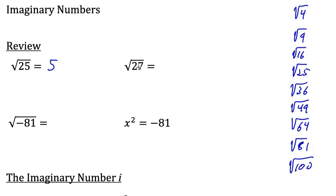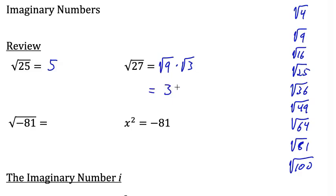27 isn't divisible by 4, but it is divisible by 9. So we can break down the square root of 27 into the square root of 9 times the square root of 3. This is helpful because the square root of 9 equals a plain old 3, and then this square root just tags along. So the square root of 27 equals 3 times the square root of 3.